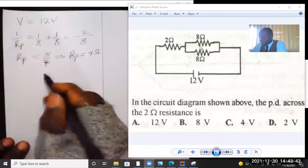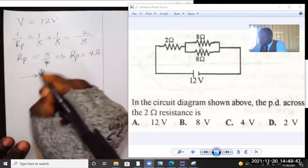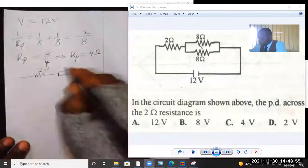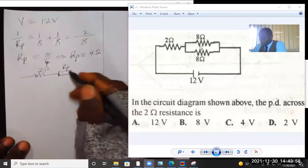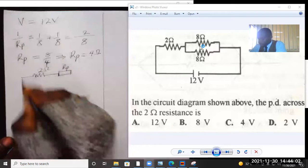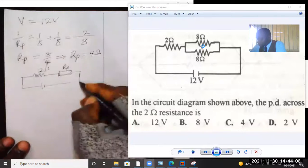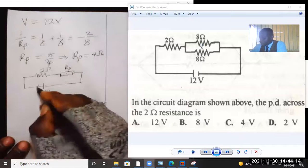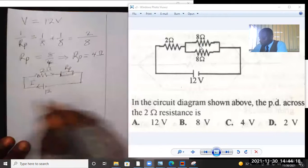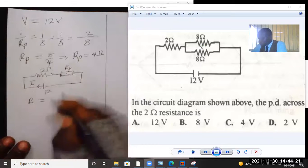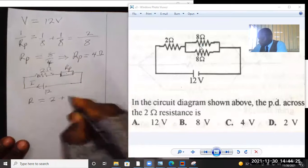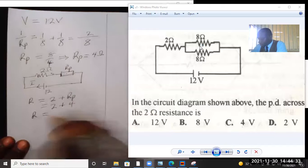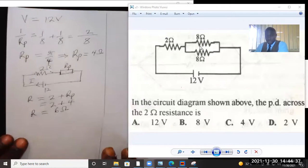Now the new diagram looks like this. We have the 2 ohms resistor. Now we have a reduced single resistor representing the 8 ohms, the two 8 ohms resistors in parallel. And we have the voltage source as 12 volts. The two resistors are reduced to RP. Now let's find the total resistance in order for us to find the current flowing in the circuit. The total resistance would be the sum of the 2 ohms plus RP which we just calculated. That is 2 plus 4. The total resistance would be 6 ohms.